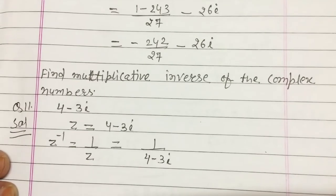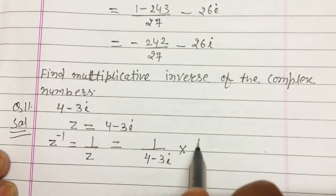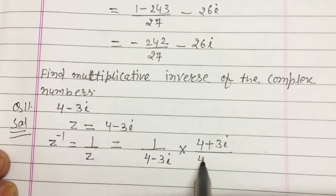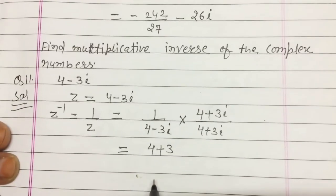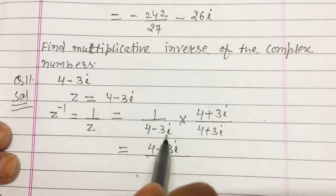Since z = 4 − 3i is in the denominator, we have to rationalize this number. So multiply with (4 + 3i) in the numerator and also (4 + 3i) in the denominator. You will get (4 + 3i) on top, and apply the property (a − b)(a + b) = a² − b² below.